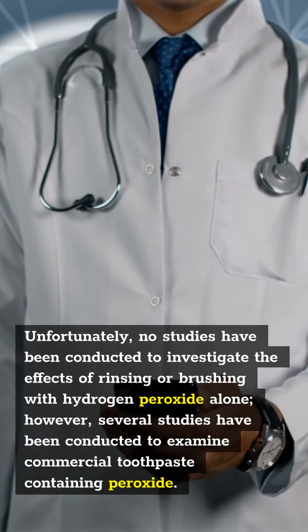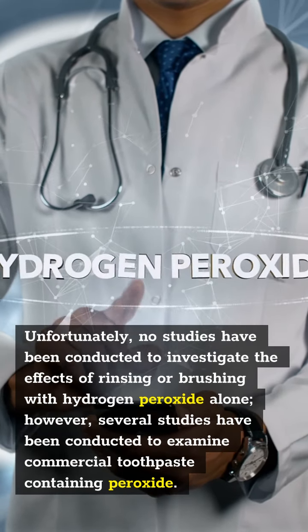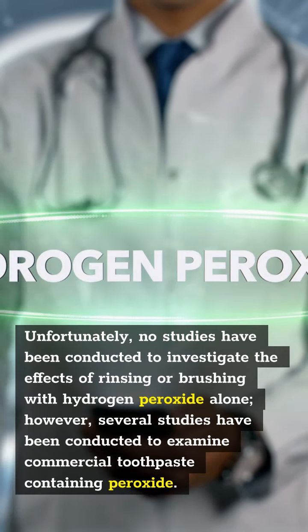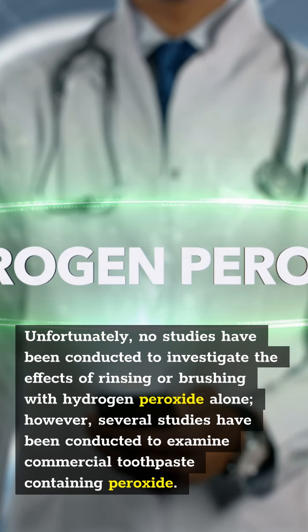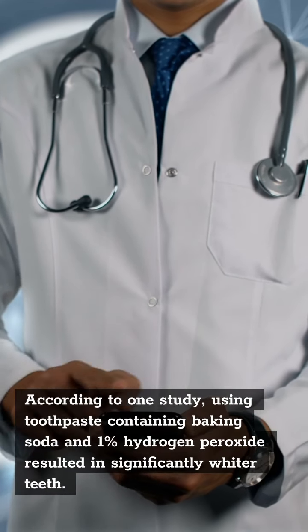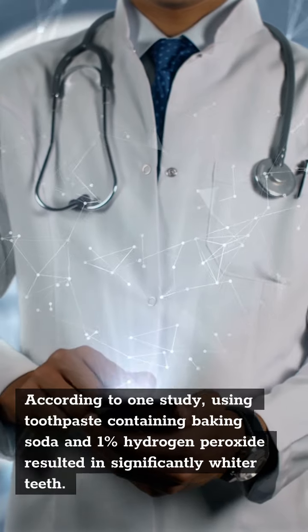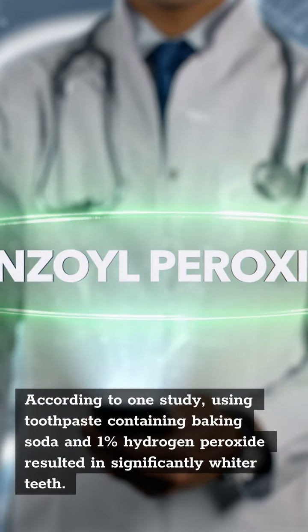No studies have been conducted to investigate the effects of rinsing or brushing with hydrogen peroxide alone. However, several studies have been conducted to examine commercial toothpaste containing peroxide. According to one study, using toothpaste containing baking soda and 1% hydrogen peroxide resulted in significantly whiter teeth.